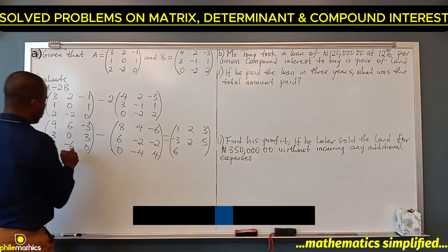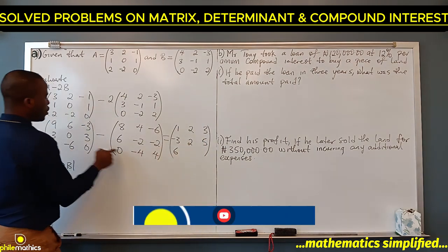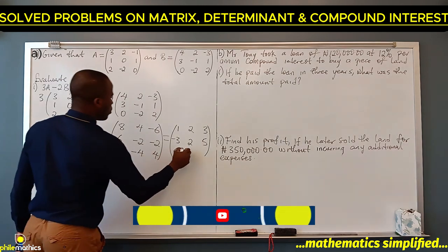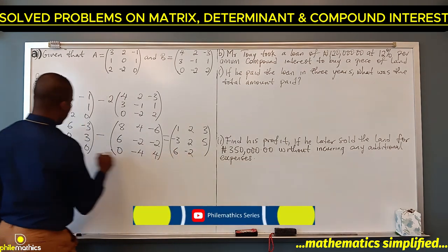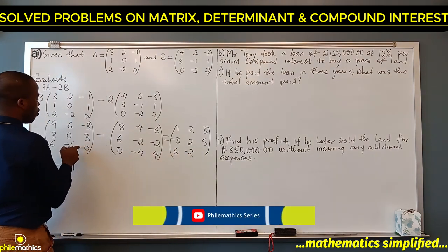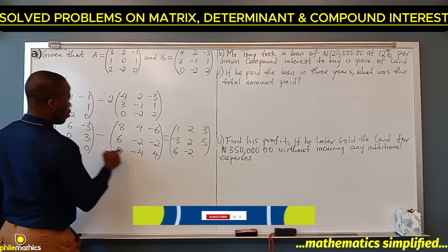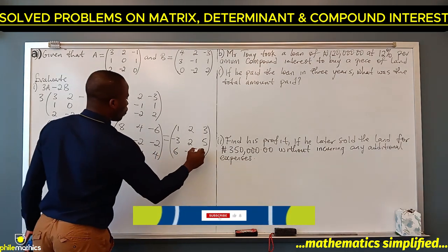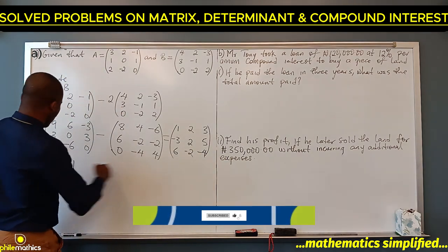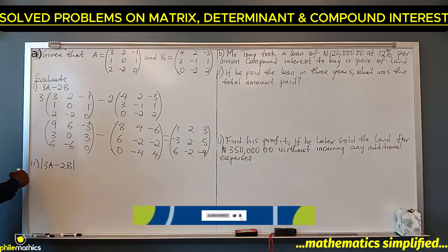-6 + 4 = -2, 0 - (-4) = -4. So that completes the result of 3A minus 2B.